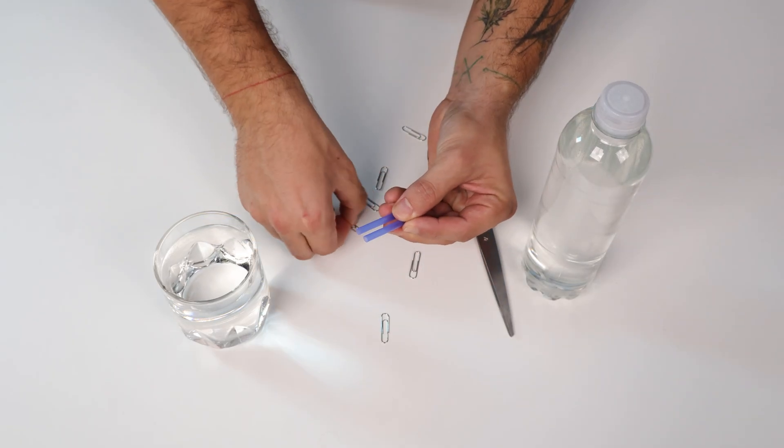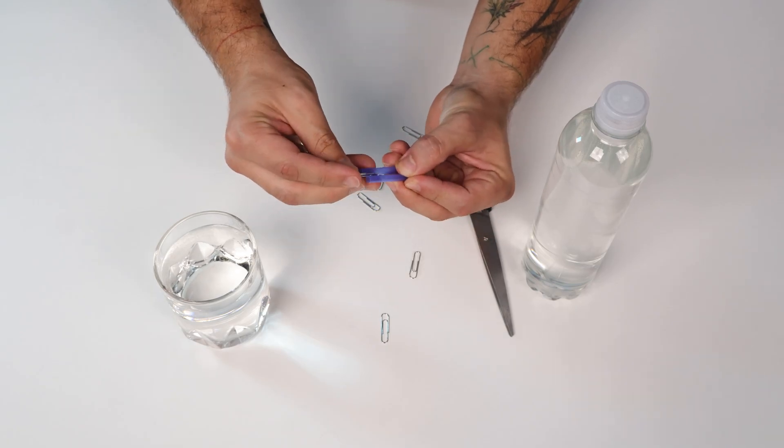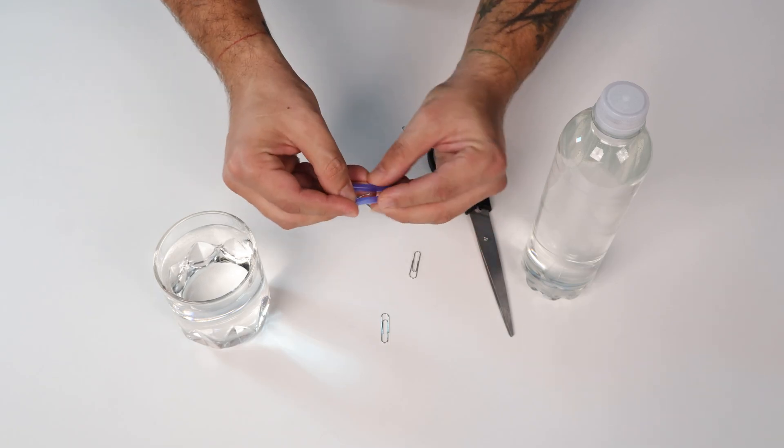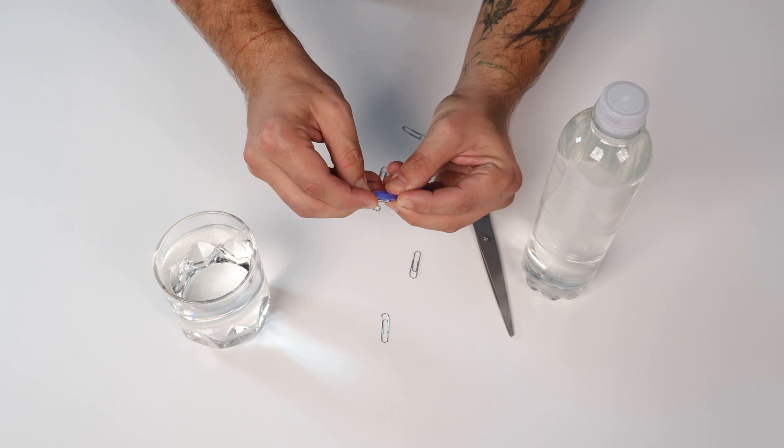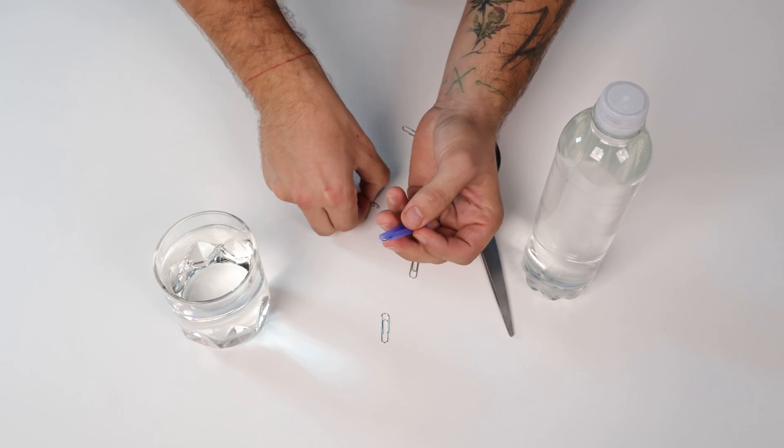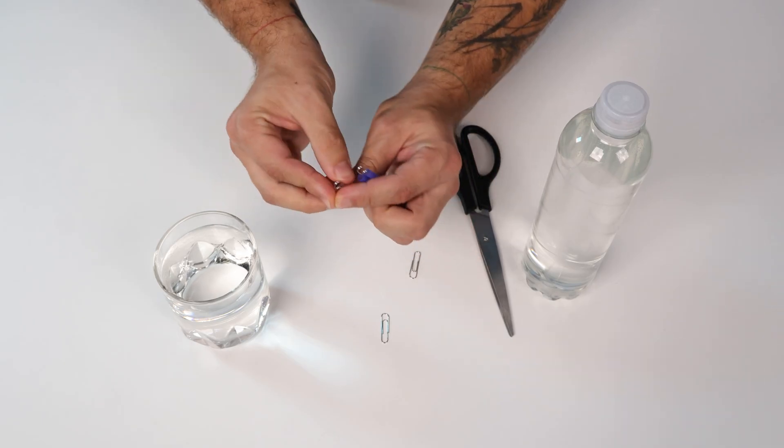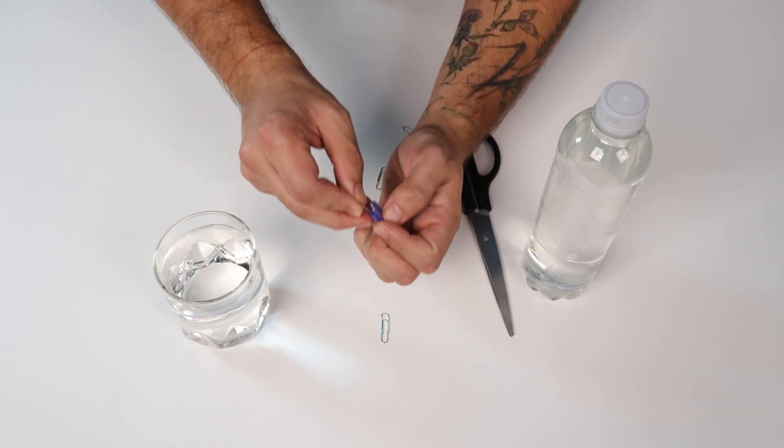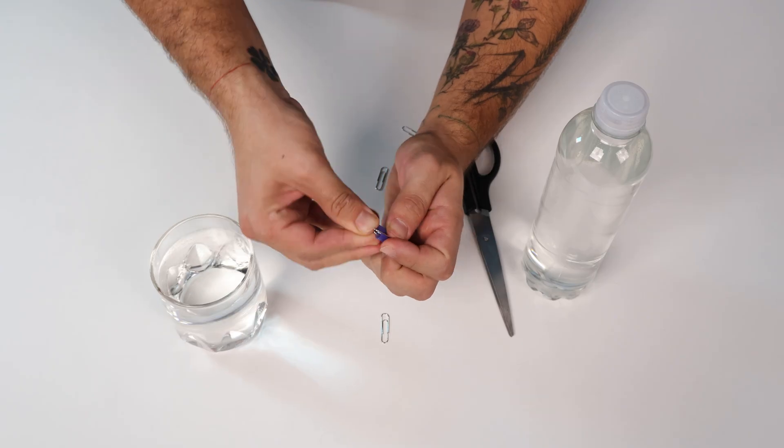Now take some paper clips and try to connect these bottom two layers of the straw. It's gonna be a bit difficult but we're gonna manage it. Now take another one and do the same thing to the other side. All right.